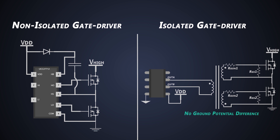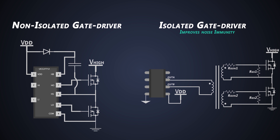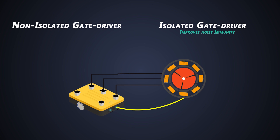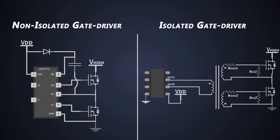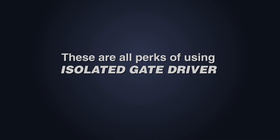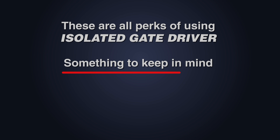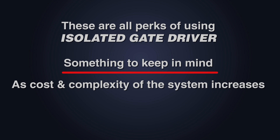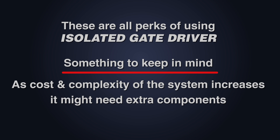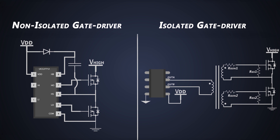The isolation element completely decouples the primary side from the secondary side of the system. Isolated drivers also improve noise immunity. Generally, high voltage systems are in noisy environments because of the transient behavior in systems such as motor controller switching, which creates electromagnetic noise. As the ground loop is interrupted in isolated drivers, only differential mode signals can pass across the isolation, while any common mode noise is completely blocked. These are all the perks of using isolated gate driver circuits. However, keep in mind that when we go for isolated drivers, the cost and complexity of the system increase because we may need extra components like isolated power supplies. But it's a small price to pay for safety.